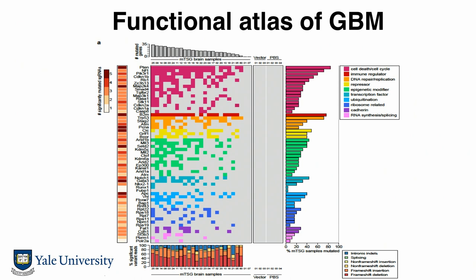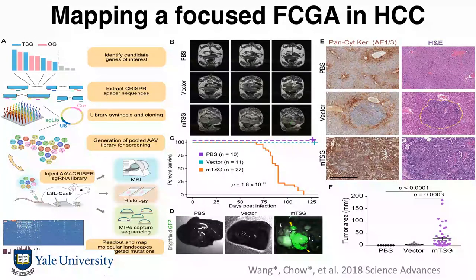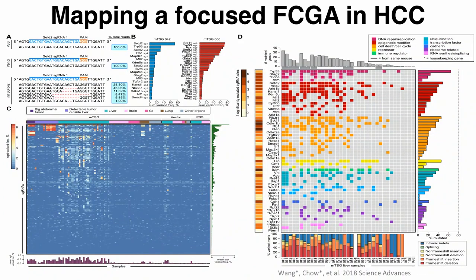We can also do this for other cancer types. For example, for hepatocellular carcinoma, instead of putting it into the brain, you put it into the liver. You can see liver cancer forming, the mouse quickly dies, and you sequence in one shot — giving you the whole map of the functional drivers of liver cancer.